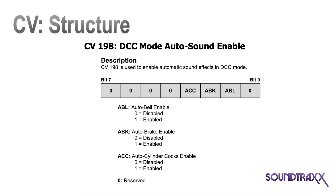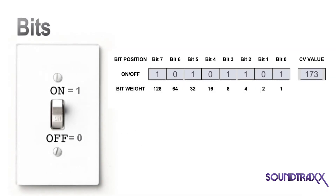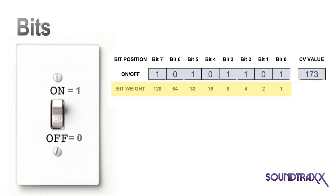The bit variables can only take on one of two values — 0 or 1 — so they are used to control features that are either on or off. It can help if you think of bits as light switches to turn on and off various features. Each bit carries a weight within the structure of a CV, beginning with a bit weight of 1 for bit 0, and doubling in value for each successive bit. So for example, bit 0 has a value of 1, bit 1's value doubles to 2, bit 2's value doubles to 4, and so on. To determine the CV value that you will enter, you add up the bit weights for each bit that you have turned on.